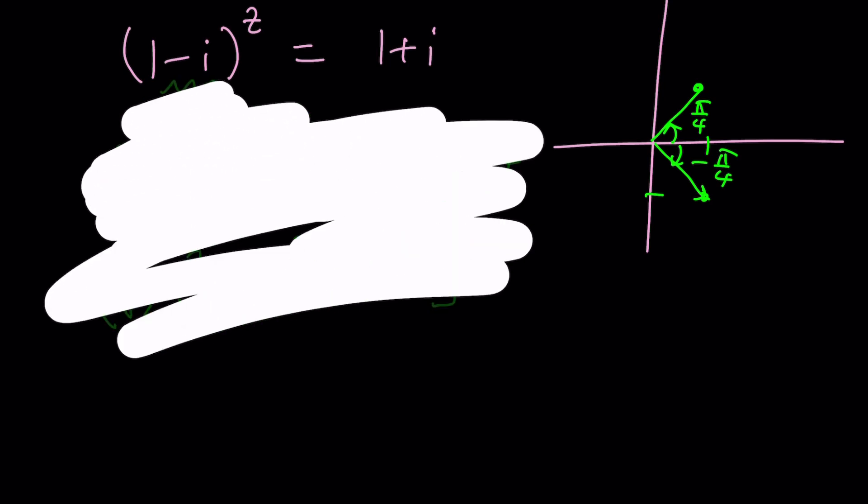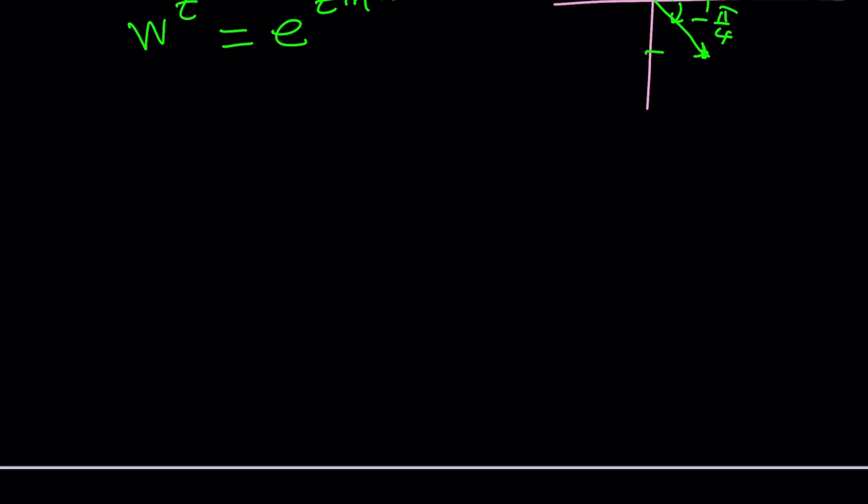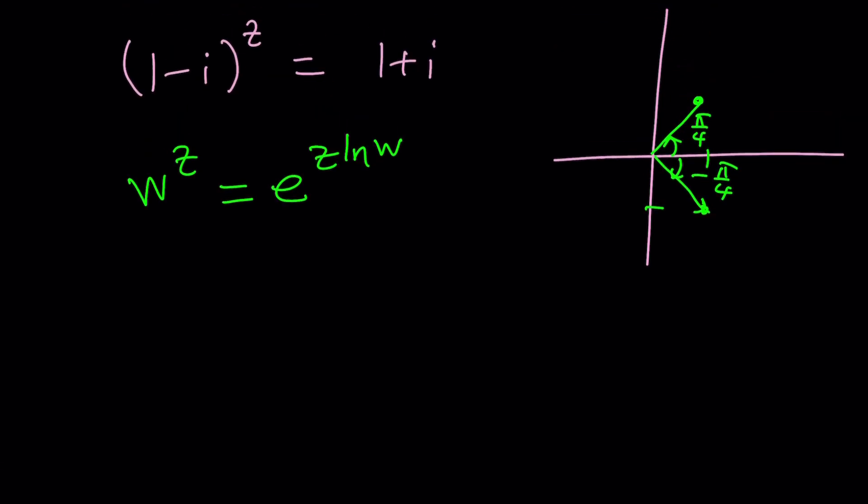What is w to the power z when w and z are both complex numbers? In other words, complex exponentiation. You can write this as e to the power z ln w. And again, that brings us to the same point. So if you go ahead and write it that way, you're going to be getting e to the power z times ln 1 minus i equals 1 plus i. And you could basically use natural log here. So it's just going to come down to the same thing. So why don't we just follow that?